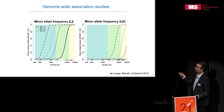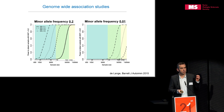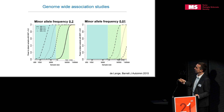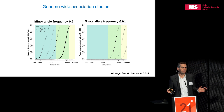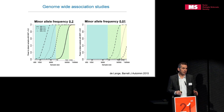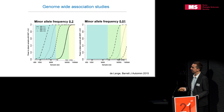It gets much more difficult when you have a low-frequency allele. If the allele is only present in 1% of the population, then even with a strong effect — say a 50% increase in risk — you need 30,000 people affected by MS and 30,000 controls. You need a very large number of people to identify these rare variants.